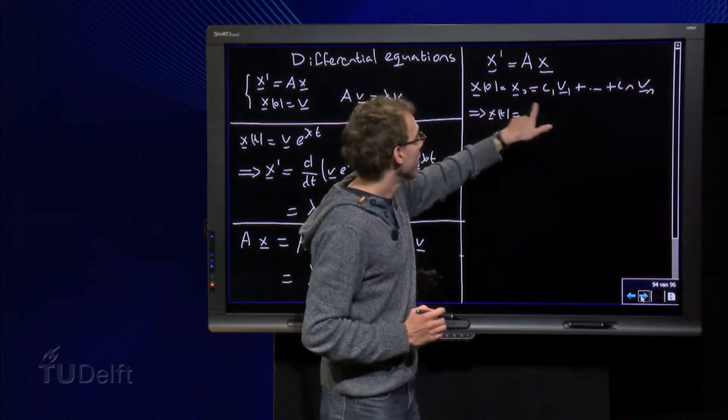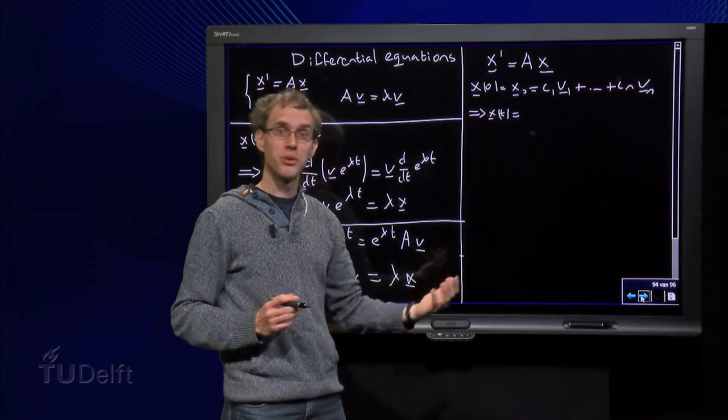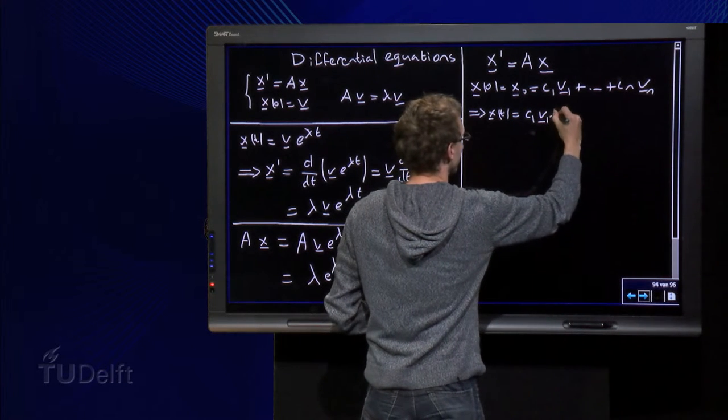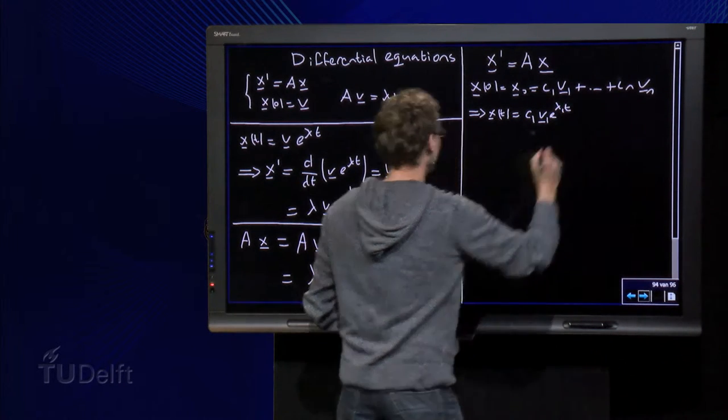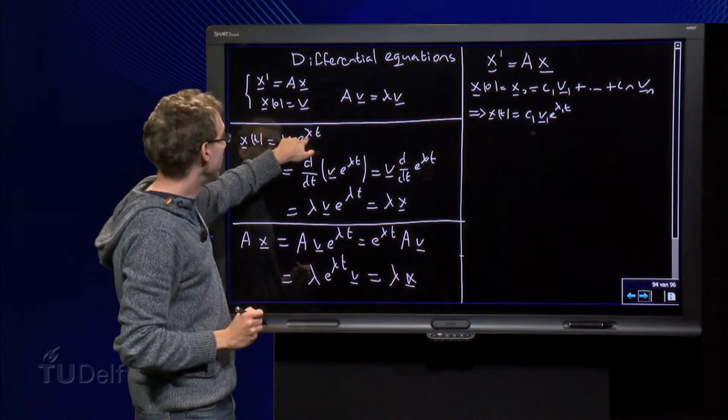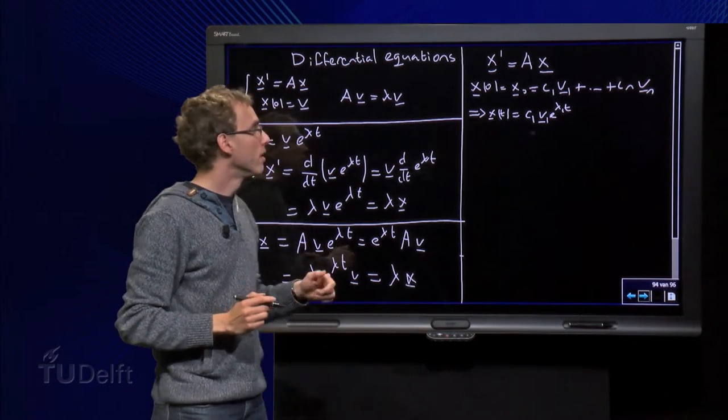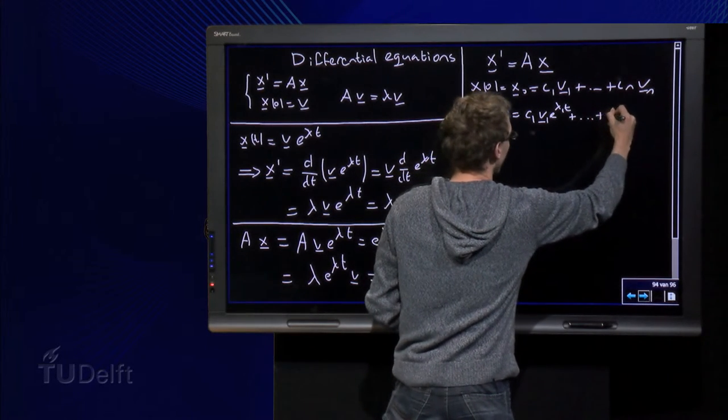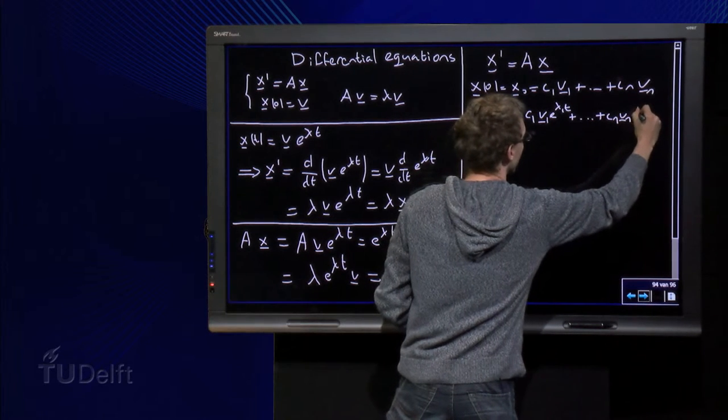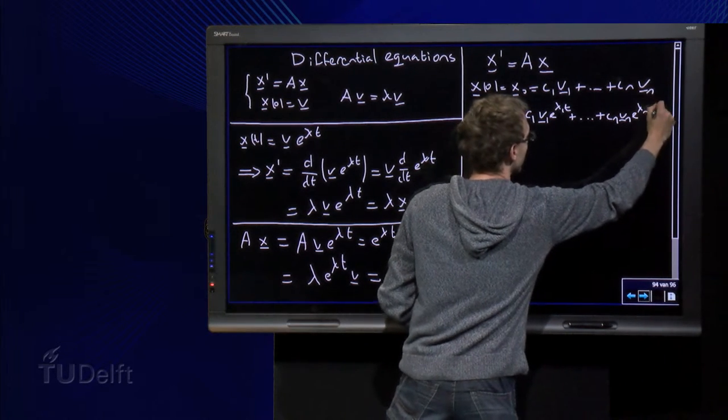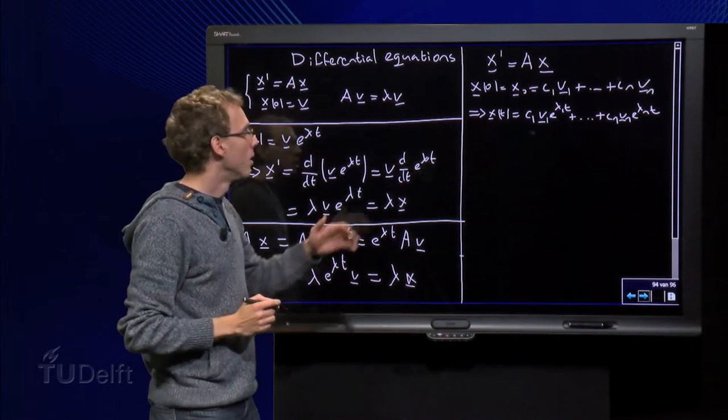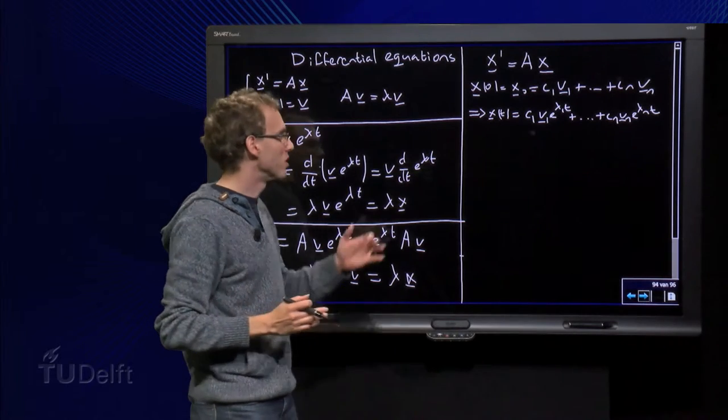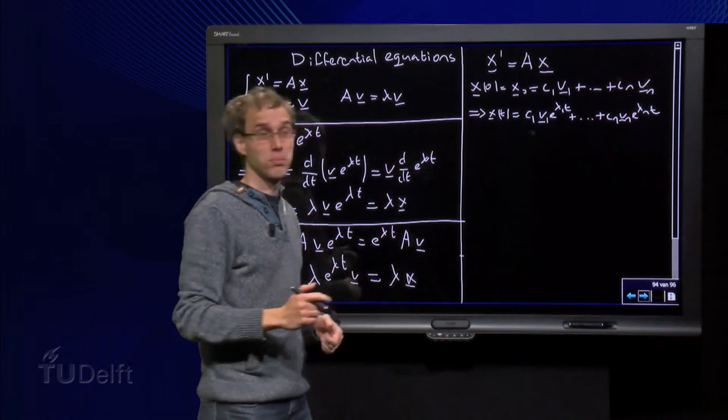So the total solution is the sum of solutions with c1 v1 as initial condition up to cn vn as initial condition. But if I have c1 times v1 as initial condition, then I know the solution, it's c1 times v1 e to the power lambda 1 t, just like here with the v1 and e to the power lambda 1 t. And then I have all the others which I have to add due to superposition. So here we have our solution explicitly, which is nice because we have our solution, but still it is a very lengthy expression of course.